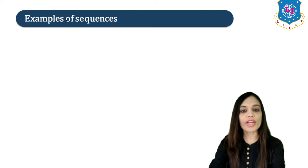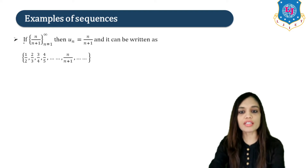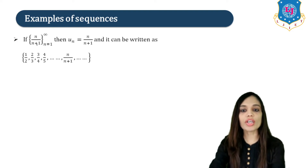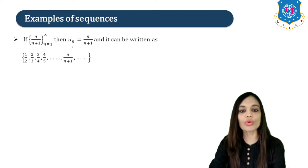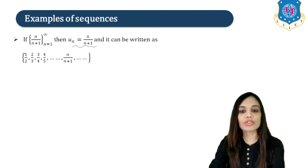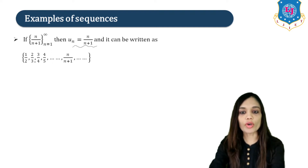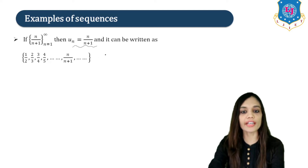Next, let us study a few examples of sequences. The first example: if the sequence {N/(N+1)}, N=1 to infinity is given, then the Nth term UN = N/(N+1). Putting N=1 gives U1 = 1/2; putting N=2 gives U2 = 2/3, and so on. The Nth term is N/(N+1) and this is an infinite sequence.